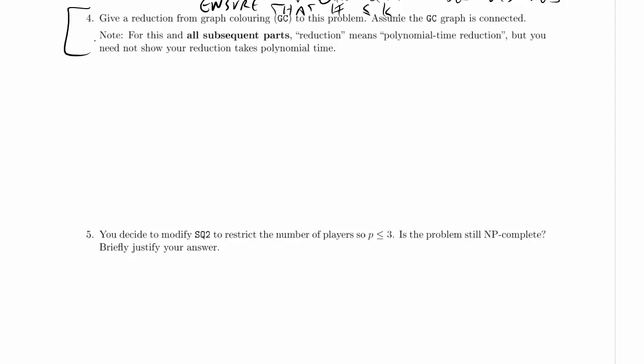We are on part four of problem six in the practice exam. Give a reduction from graph coloring to this problem, and if you've been following along previously, this was the obvious problem to do a reduction from, because we already saw that we end up coloring star systems in order to get a solution to this.